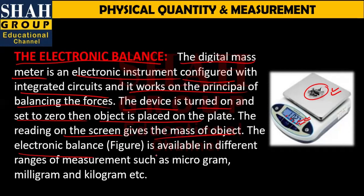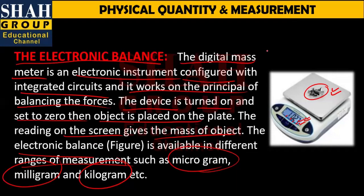This electronic balance is available in different ranges of measurement. Different range options are available — if the object is very small, you can measure it in micrograms or milligrams. If the object's mass is larger, you can measure it in kilograms, as you know from this chapter where we studied different prefixes and multiples of units for mass, time, and length.